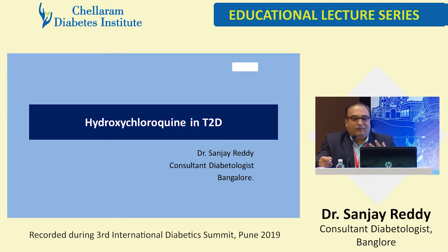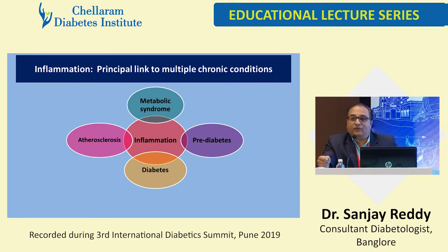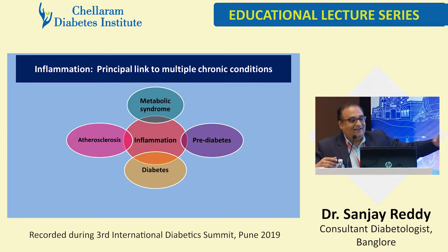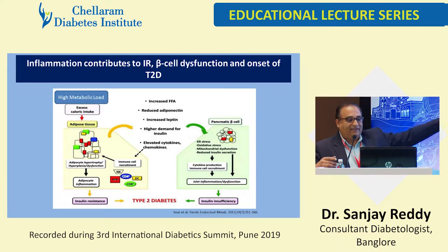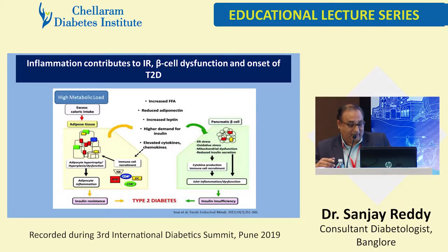We all know the principle linking multiple chronic conditions, and he pointed out rightly that it's an amalgamation of all this. Inflammation contributes to insulin resistance, beta cell dysfunction, and onset of type 2 diabetes. Krishna put it in a very nice story about FOXO, adiponectin levels, and all the interleukins. All these cause increased FFA, reduced adiponectin, increased leptin, higher demand for insulin, elevated cytokines and chemokines — ultimately leading to pancreatic beta cell dysfunction.